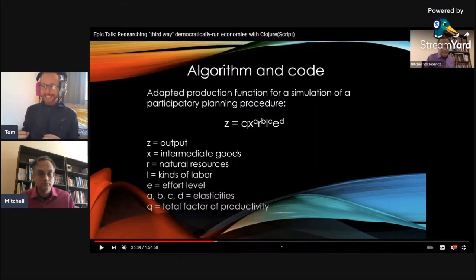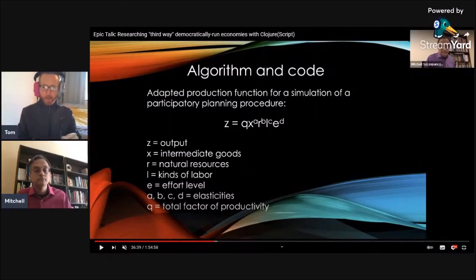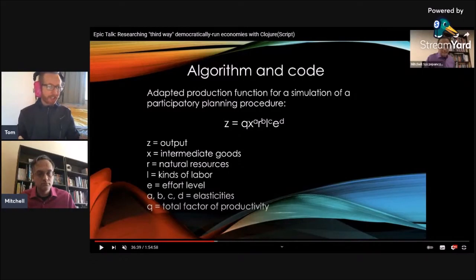Now, when it comes to the modeling, it seems to me like that you're using these production functions as a way to estimate, given the inputs, what the output will be. But in reality, we're not saying that these workers' councils actually create a production function. They just say, give us this, we'll do that. Am I correct?